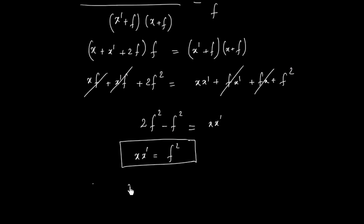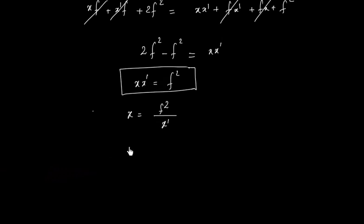So this relationship can also be written as X equals F squared divided by X dash, or X dash equals F squared by X.